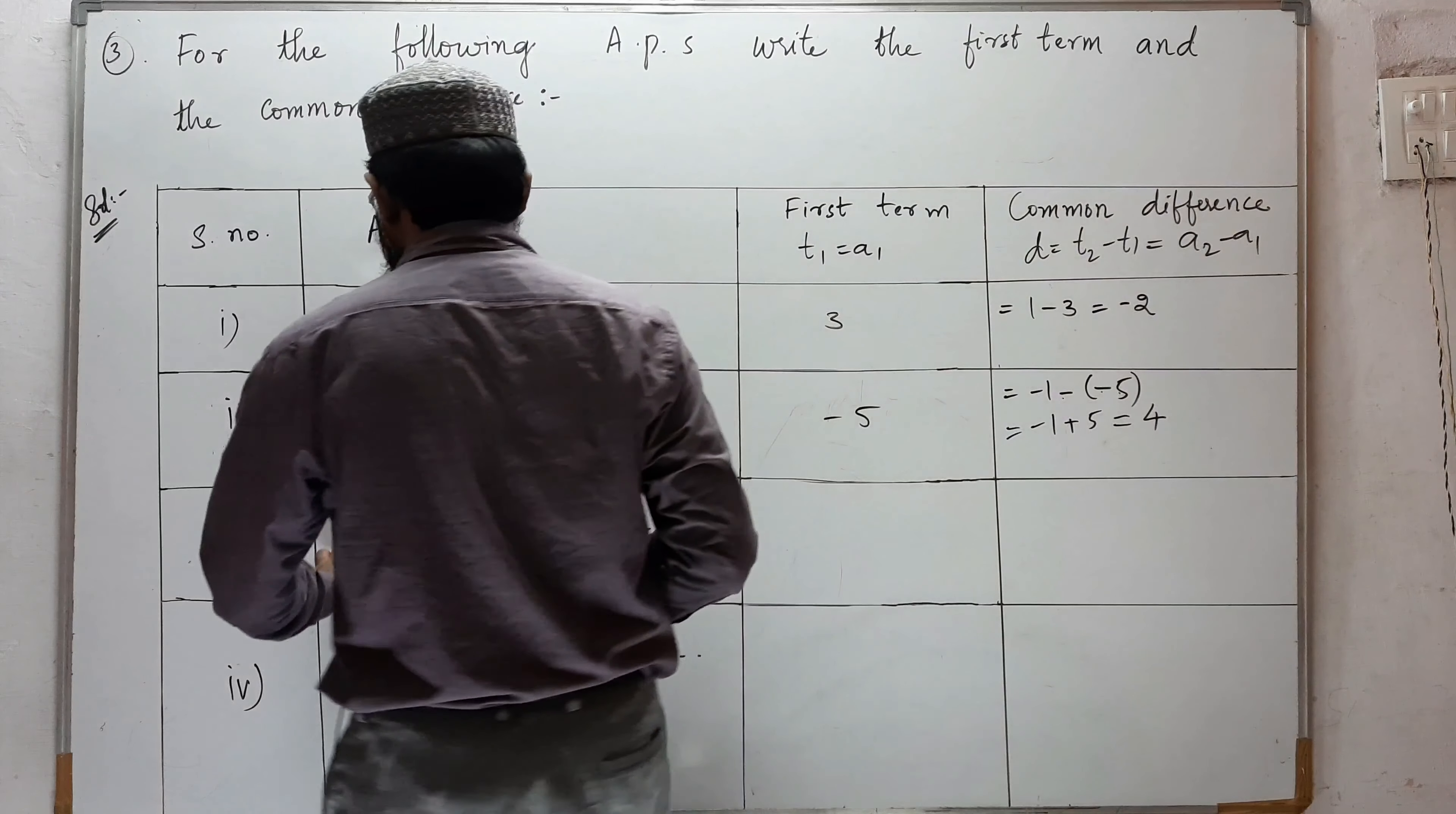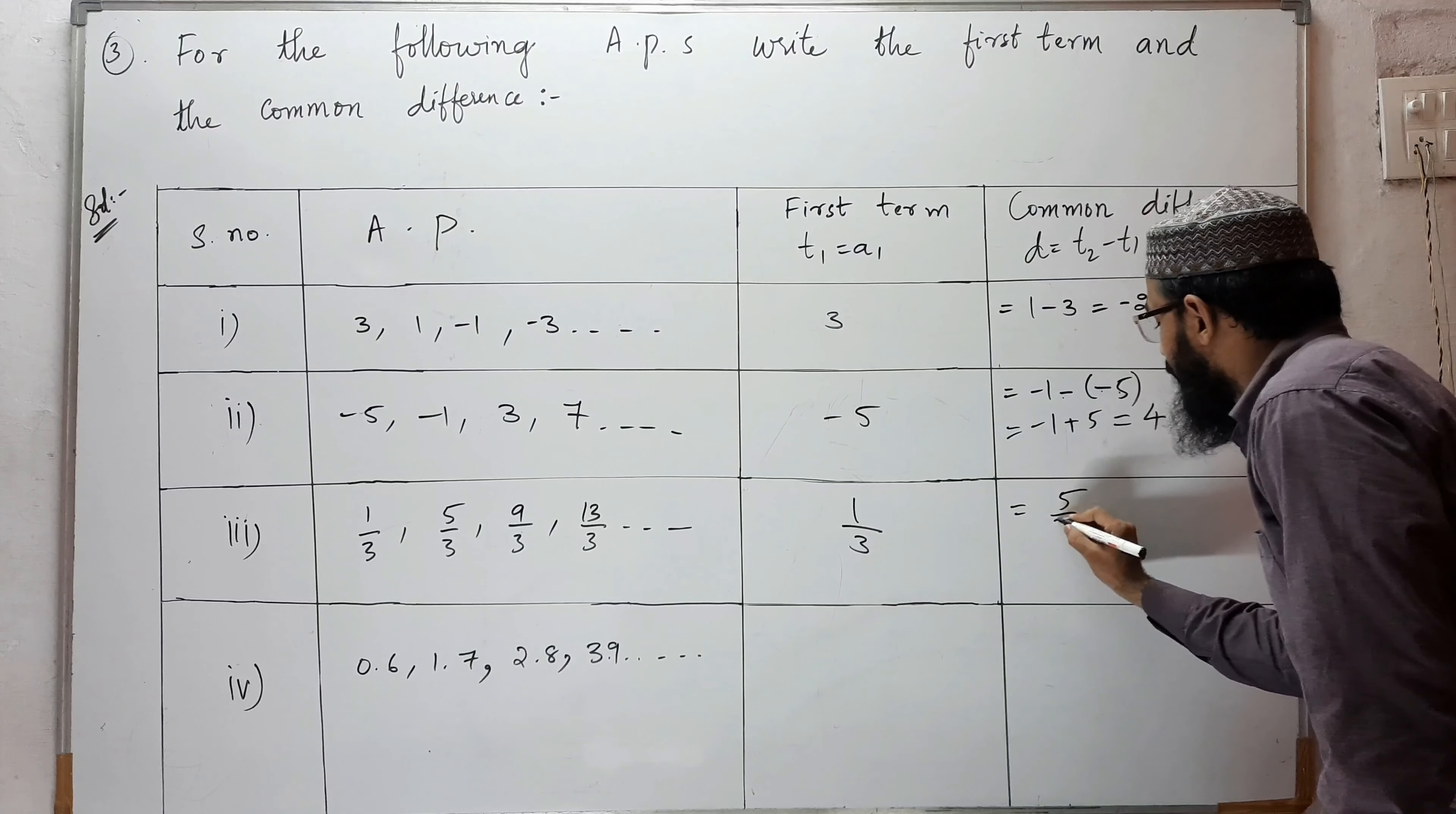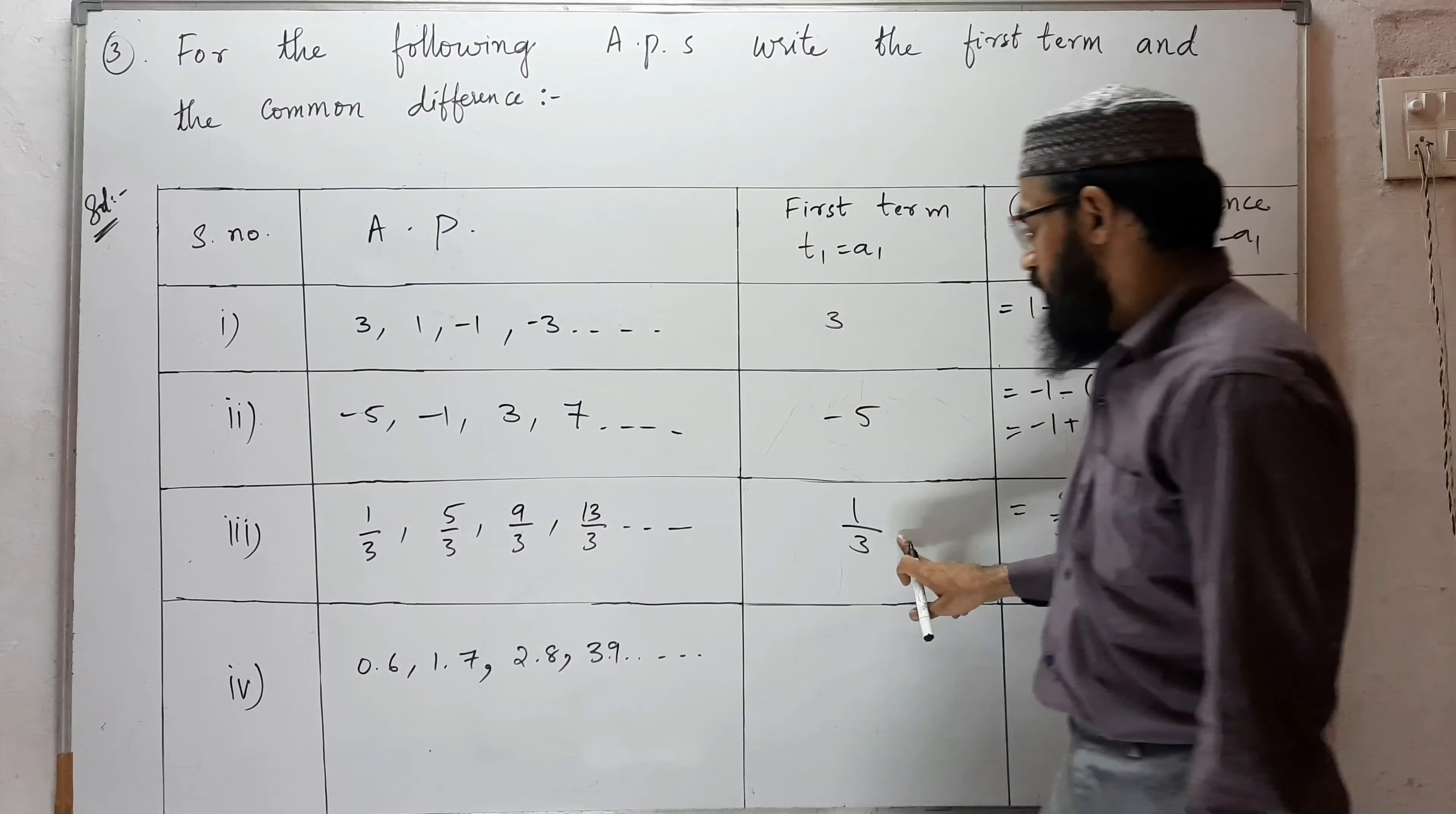Next: 1/3, 5/3, 9/3, 13/3, and so on. The first term is 1/3. The common difference is 5/3 minus 1/3. The LCM is 3, so 5 minus 1 equals 4/3. The common difference is 4/3, and the first term is 1/3.